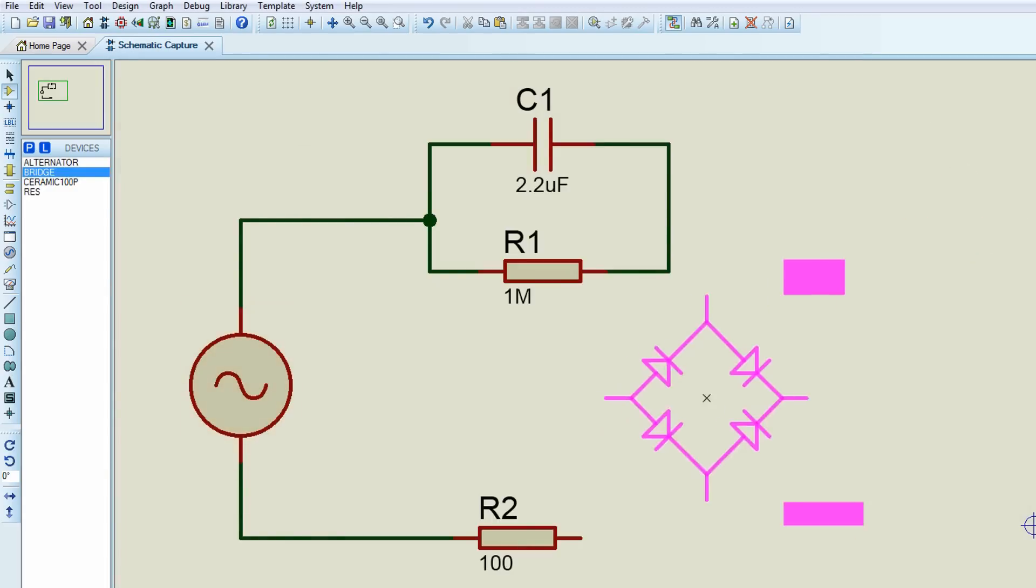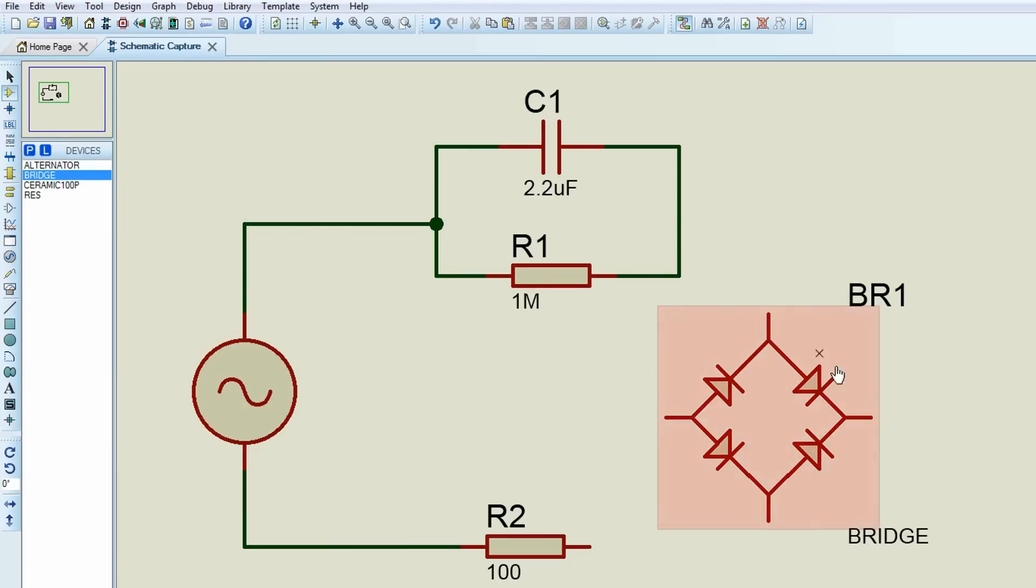Further bridge rectifier combination of 4 diodes has been used to remove the negative half component of AC. This process is called the rectification.